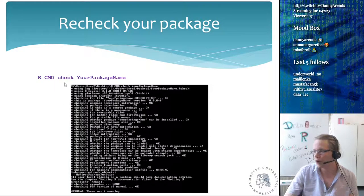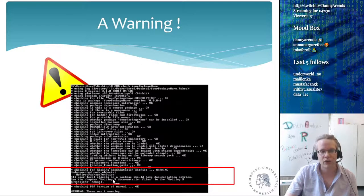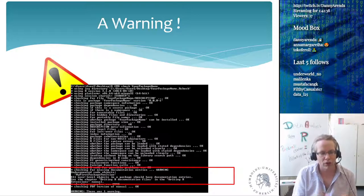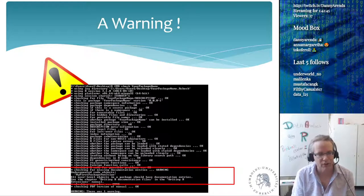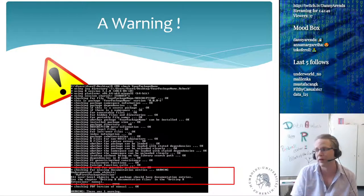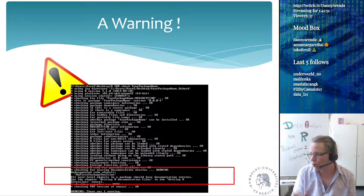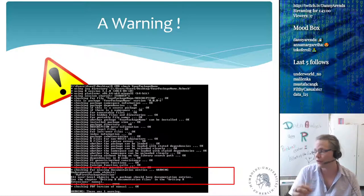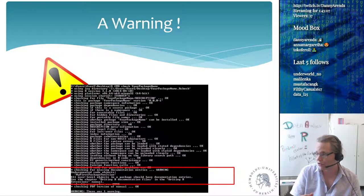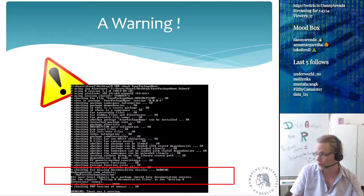Running 'R CMD check your_package_name' again now produces a WARNING: 'Undocumented code objects — all user-level objects in a package should have a documentation entry.' Every function inside a package needs a documentation file — a help file describing what the function does, providing an example, and meeting other requirements specified in the R extensions manual.